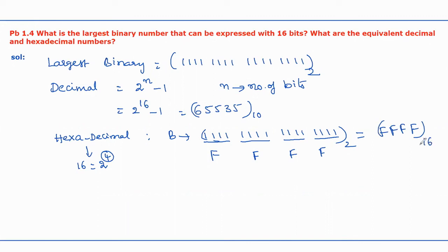This is the answer. The equivalent decimal number is 65535, the equivalent hexadecimal number is FFFF, and the largest binary number is 1111111111111111. This is the solution for the given problem.